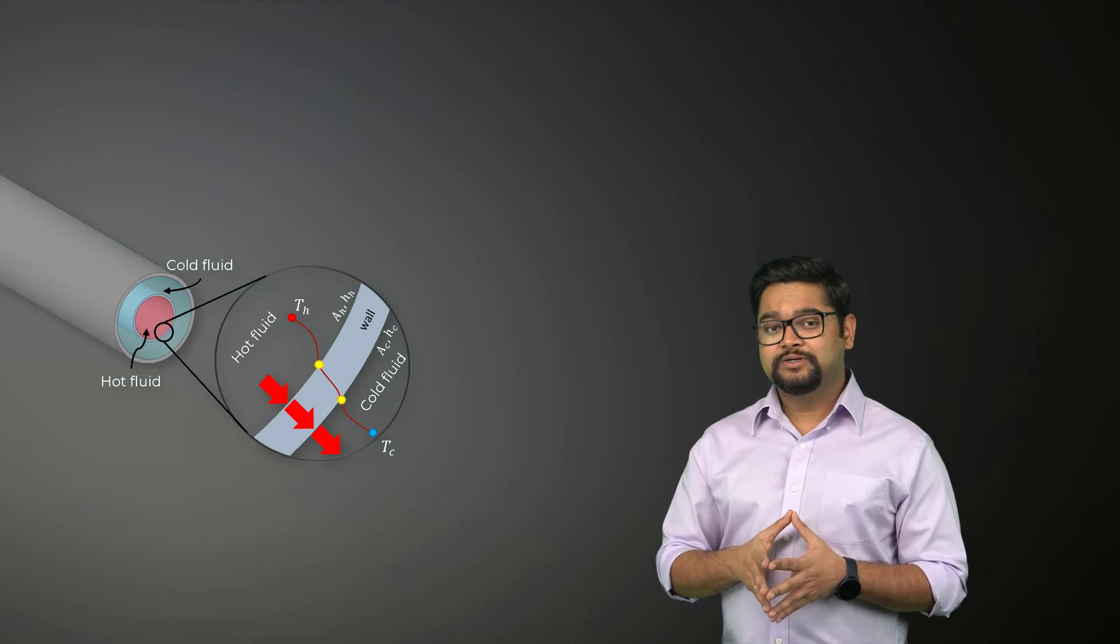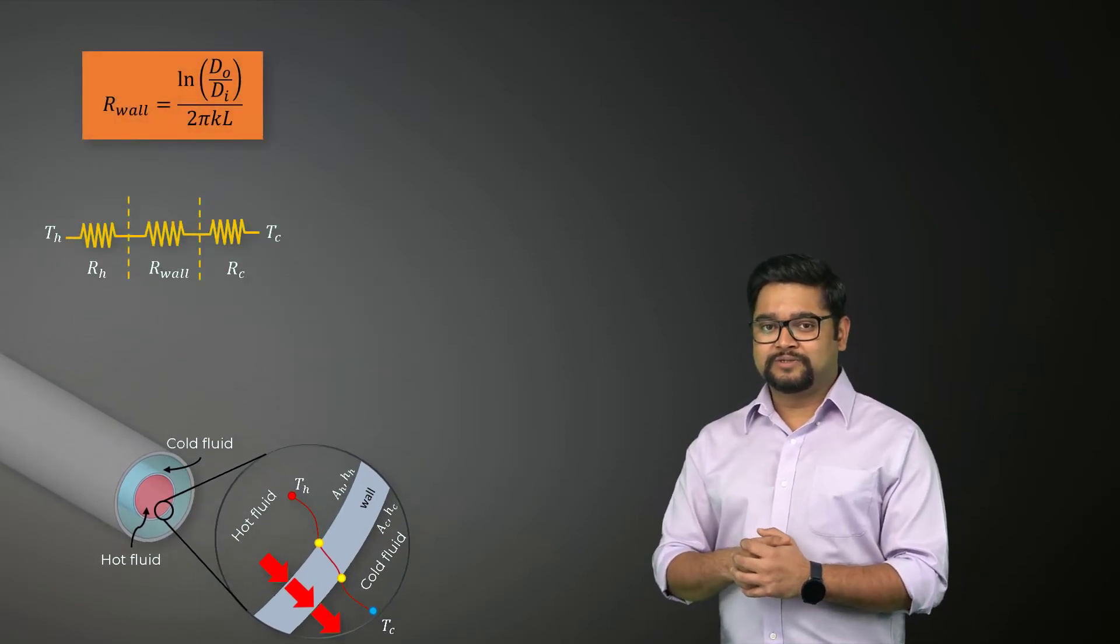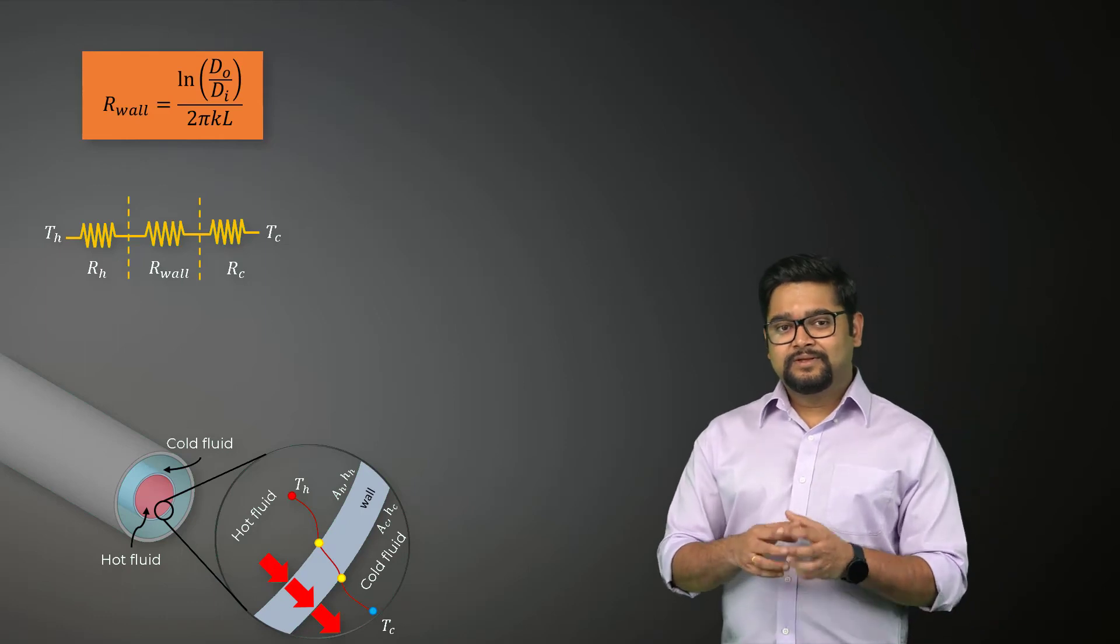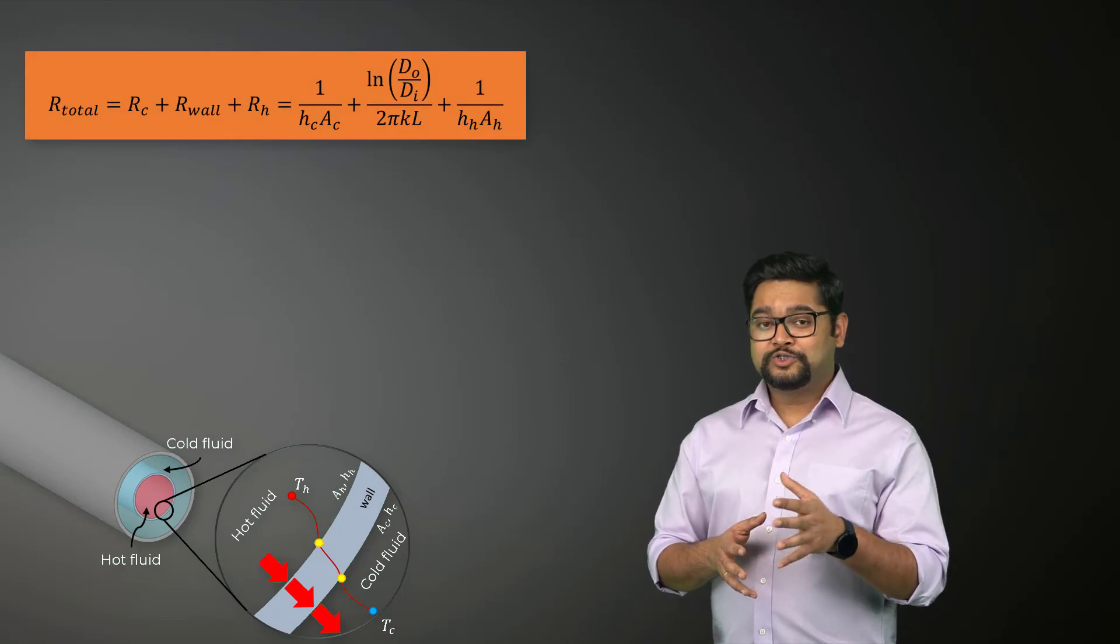For a double pipe heat exchanger, the thermal resistance of the tube wall is given by this expression. We can now get the total thermal resistance between the two fluids as shown here.